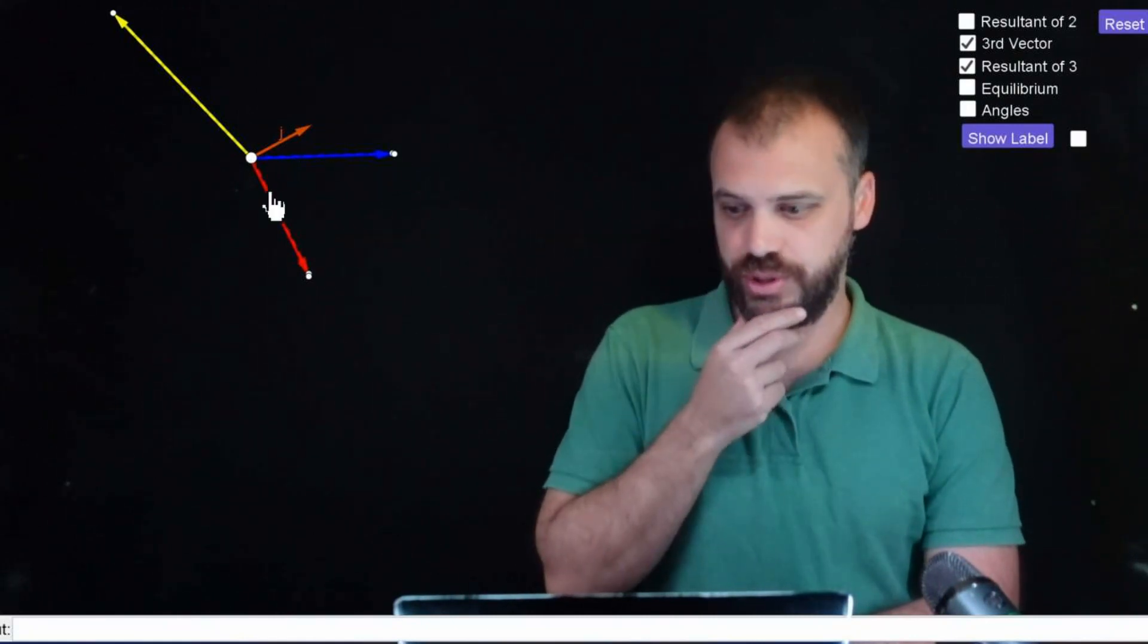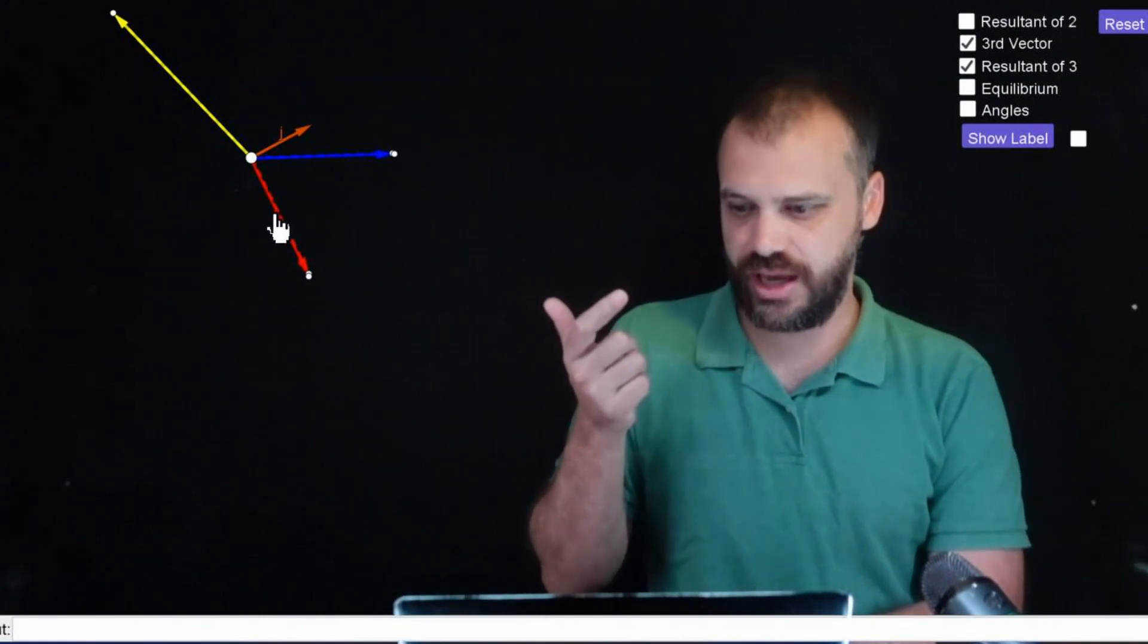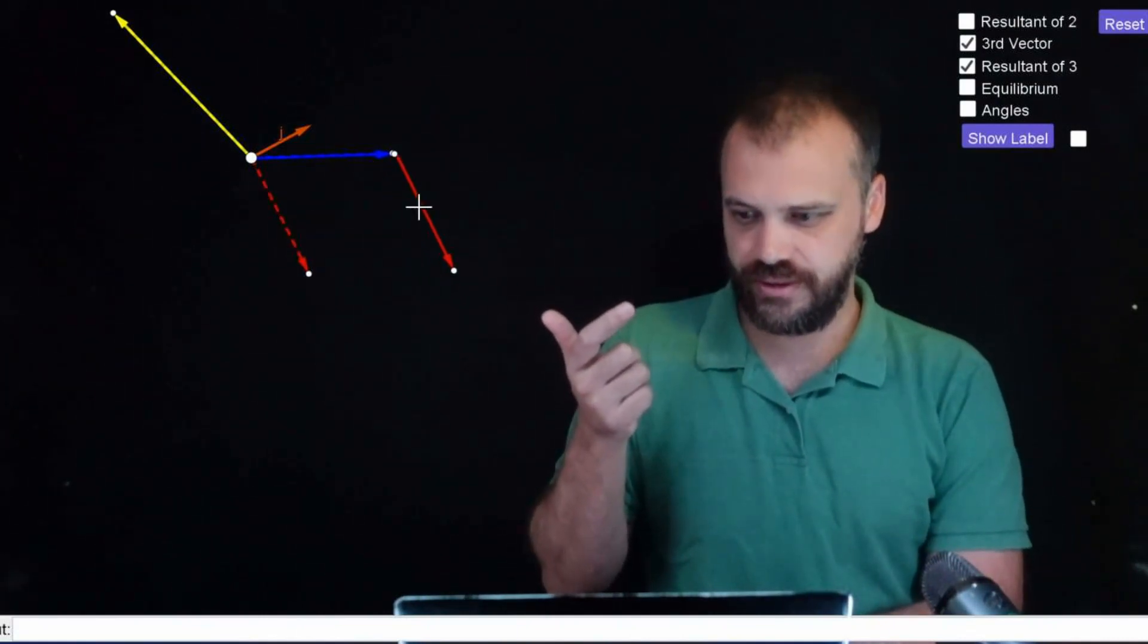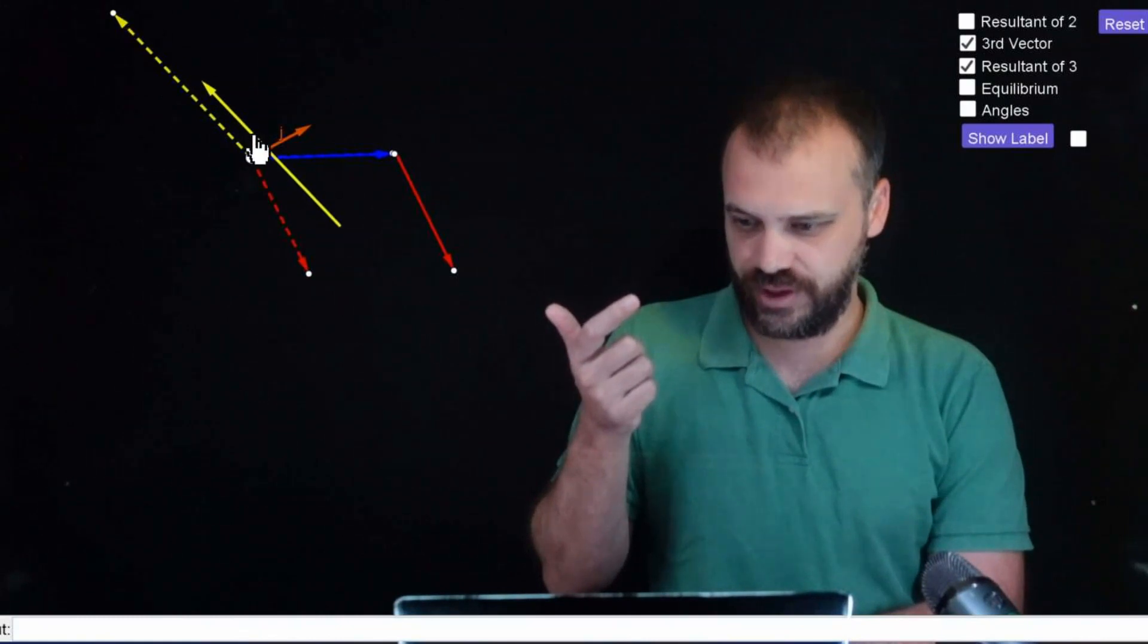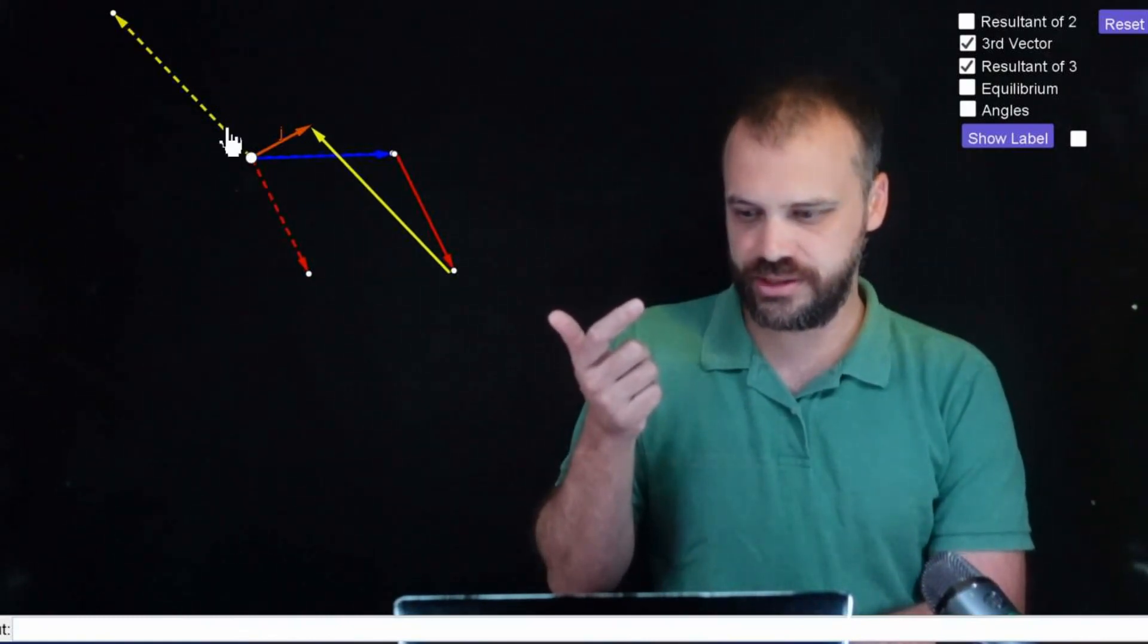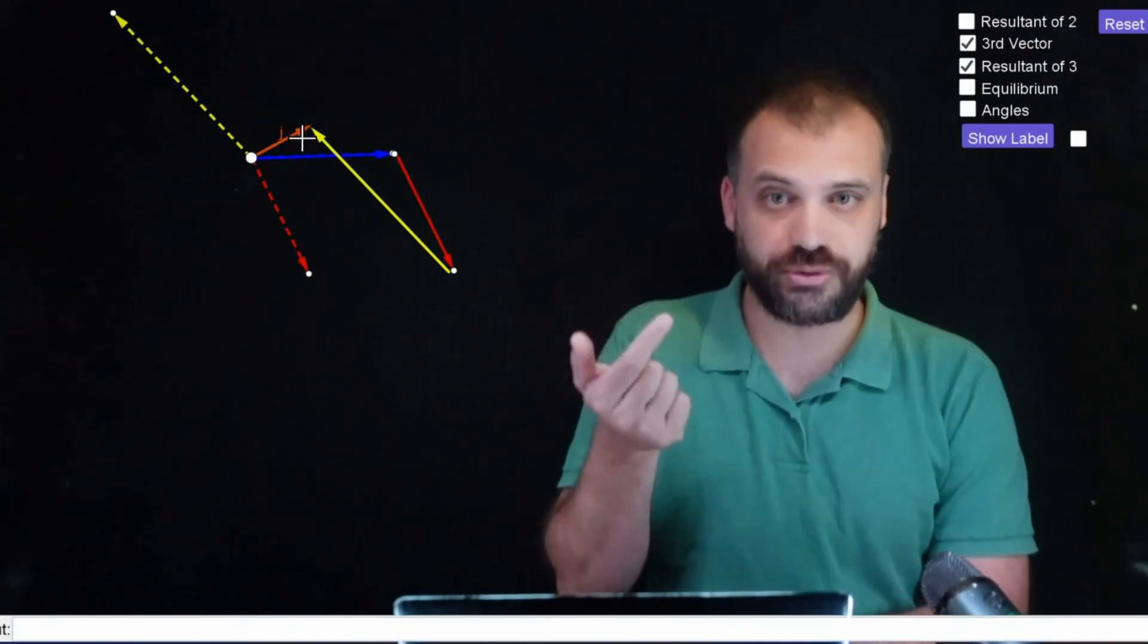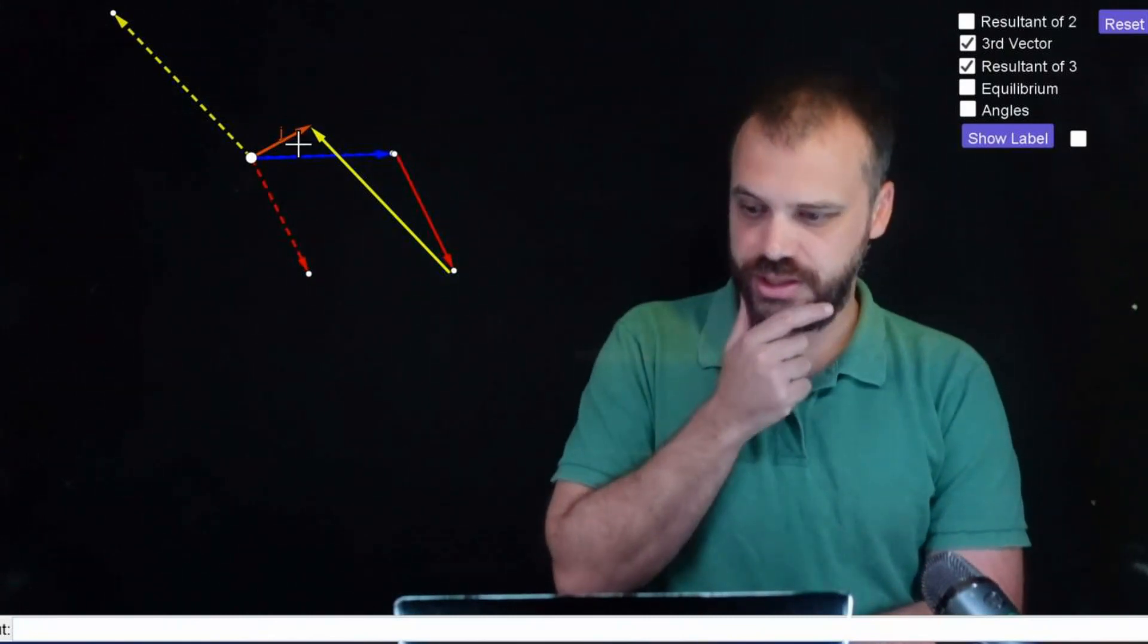And of course, we can do the same thing we did before. To calculate that, we would just add one of the vectors to one of the other vectors, and then the third vector to the tip of that. And so what we've got is the blue vector plus the red vector plus the yellow vector makes this resultant vector right here.